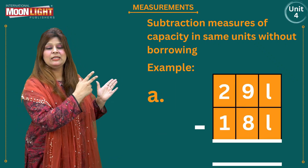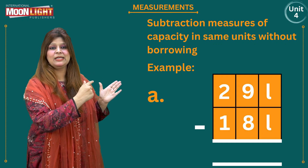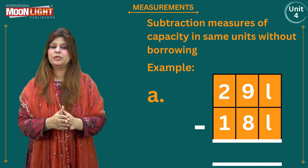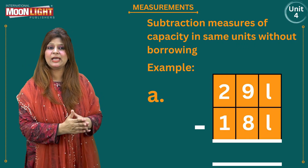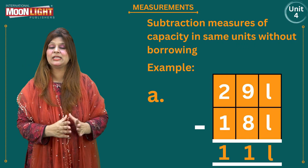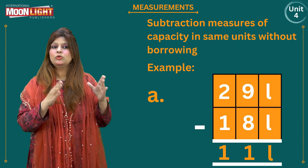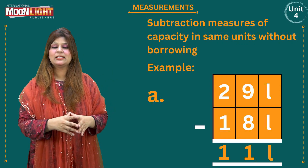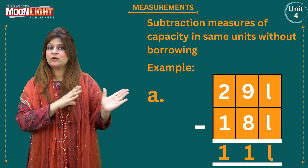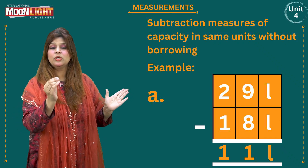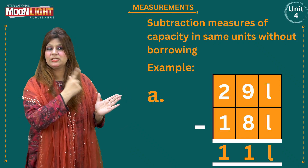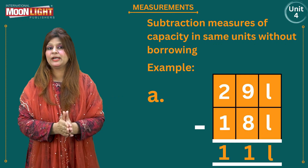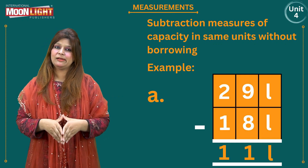The first example is twenty-nine litres minus eighteen litres. You are going to start from the right-hand side: nine minus eight is one, two minus one is one. Remember to write the unit of measurement, which is litres. So eleven litres is the final answer.